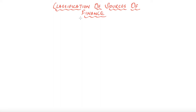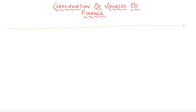Friends, as we have discussed that there are various sources of finance, now it is time to take an overview regarding the classification of such sources of finance which we are going to learn in this chapter. Let's do the classification by making a flowchart first, and after that we will learn about each and every basis as well as the actual sources of finance. The classification is done on three bases.